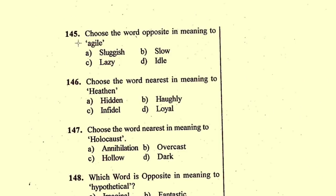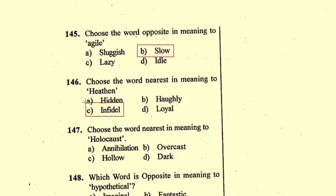Question number 145: Choose the word opposite in meaning to 'agile' — agile means 'phurtila' in Hindi, and the opposite word is 'slow', option B. Question number 146: Choose the word nearest in meaning to 'heathen' — the nearest word is 'infidel', meaning adhering to a religion other than that of the majority. Option C is correct.